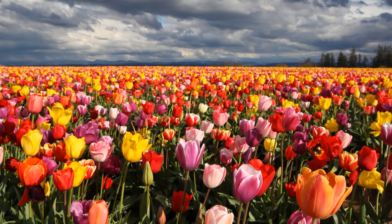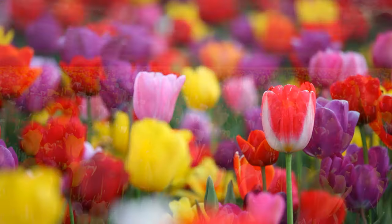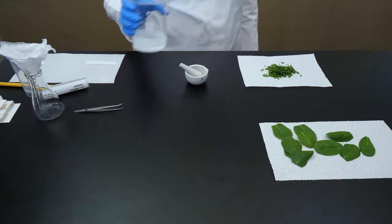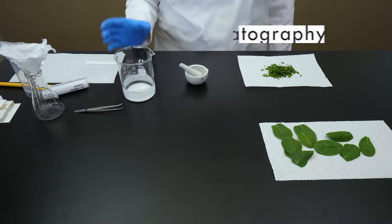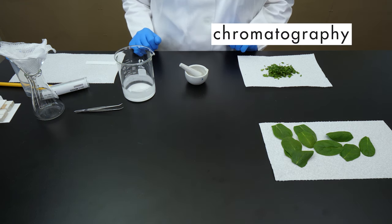To take advantage of all the colors of the spectrum, plants use chlorophyll A, chlorophyll B, and carotenoids. We will use a process known as thin-line chromatography to separate the mixture of pigments in a green leaf.